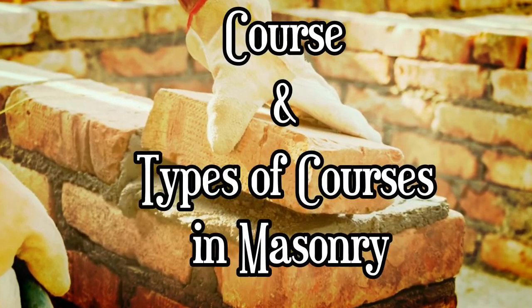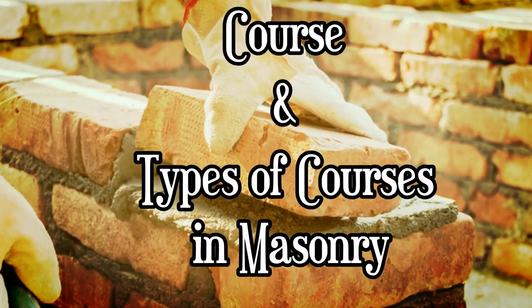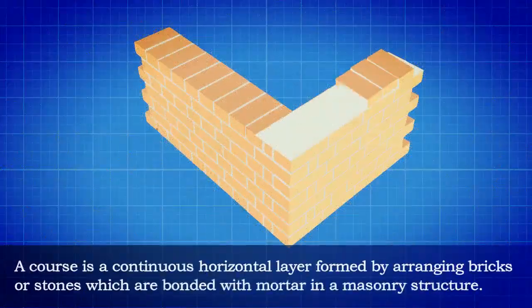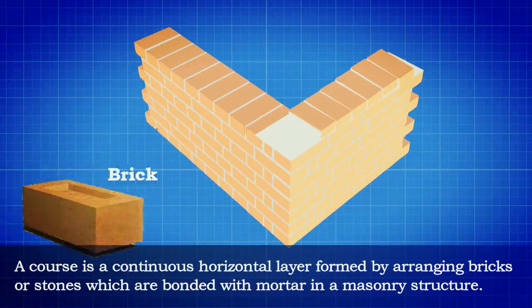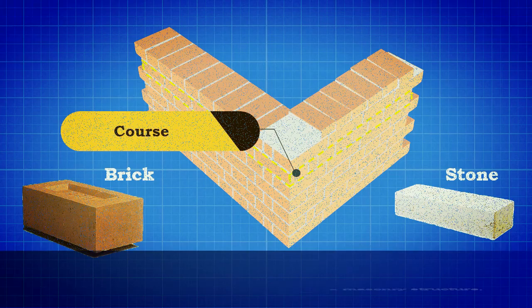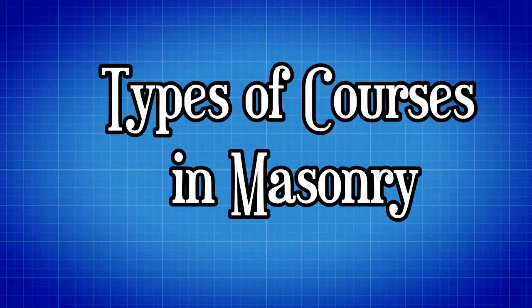Course and types of courses in masonry. A course is a continuous horizontal layer formed by arranging bricks or stones which are bonded with mortar in a masonry structure. Let us now see the different types of courses used in masonry.